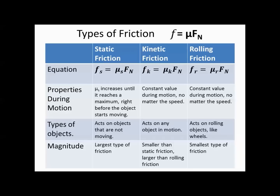Here's a comparison of our forces of friction. We use the same equation for all of them — the difference is the coefficient particular to that type of friction: coefficient of static friction, coefficient of kinetic friction, coefficient of rolling friction. Static friction increases and reaches a maximum right before the object starts moving. Kinetic friction is a constant value while moving, regardless of speed. Same with rolling friction — it's a constant value during motion. Static friction acts on objects not moving, kinetic on objects in motion, and rolling friction on rolling objects like wheels.